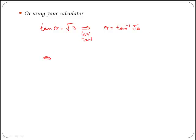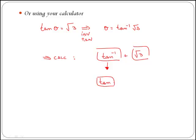Now if you want to solve this, you need to go to your calculator and press the button for inverse tan, then press the button for the square root of 3. Keep in mind that in most calculators, tan minus 1 is just on top of the tangent button, so usually you have it somewhere here. In order to get the inverse tan, you need to apply the shift button first.